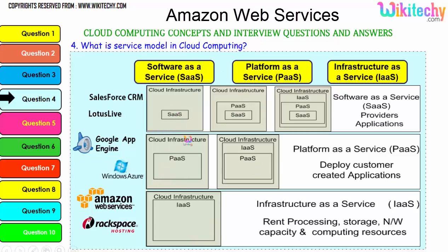Examples of Software as a Service include Lotus Live and Salesforce CRM. Examples of Platform as a Service include Windows Azure and Google App Engine. For Infrastructure as a Service, examples include Amazon Web Services and Rackspace Hosting.